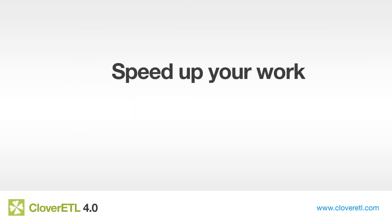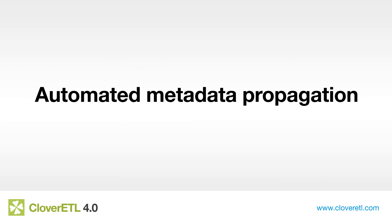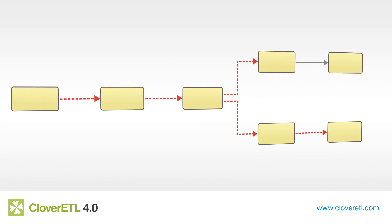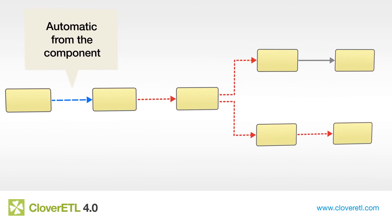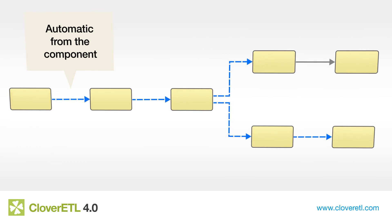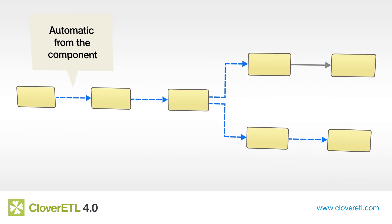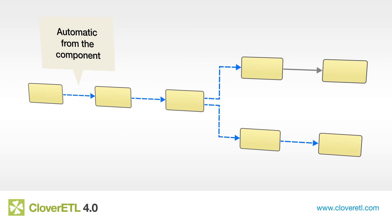Another major update that speeds up your work and allows you to design flexible transformations is automated metadata propagation. First, components — now including subgraphs — can define their own metadata. And second, Clover tries to propagate any metadata it can as far as it can, saving you time assigning metadata to every single edge.